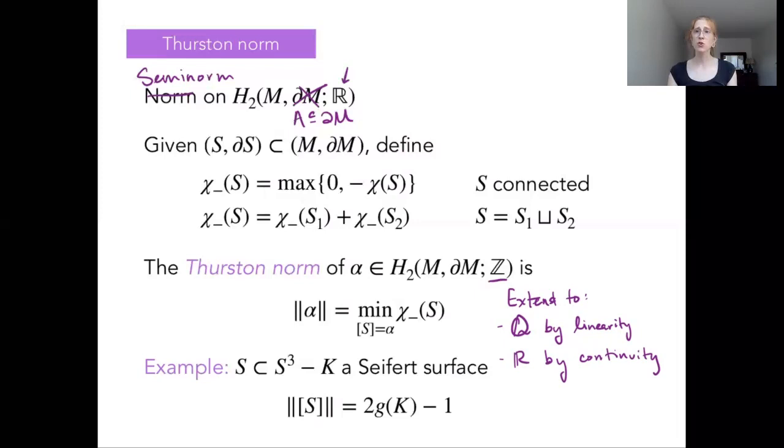So this gives us a measure of complexity for anything in integral homology, but I said I wanted to define my semi-norm on real homology. One last comment I want to make on the Thurston norm is that while this may seem a strange definition, this actually lines up with something you've maybe heard about, which is knot genus. So asking what's the Thurston norm of the unique homology class in H₂ of a knot complement is the same thing as asking what's the genus of that knot.